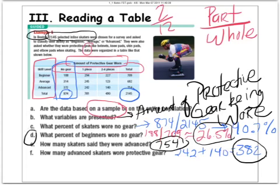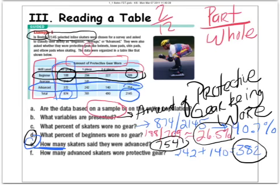Part D, what percent of beginners wore no gear? They want to know the percent of the beginners. So, of the beginners, there were only 709 people that were beginners. Of those that wore no gear, 188. So, do 188 over 709. Get the decimal, times it by 100. We have about 26.5%. Part E is asking how many. How many is a count? This is not a percent. How many skaters said that they were advanced? Don't overcomplicate it. The advanced skaters, you're going to find. Here's total advanced. Right there, 754. And then how many advanced skaters actually wore protective gear. What you're going to do is look at the advanced skaters, the ones that wore protective gear, either these folks or these folks here. Add it up, you get the 382.